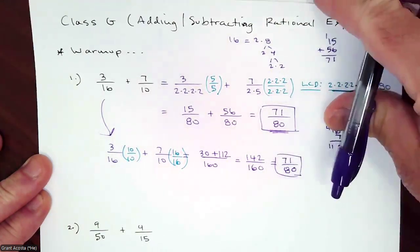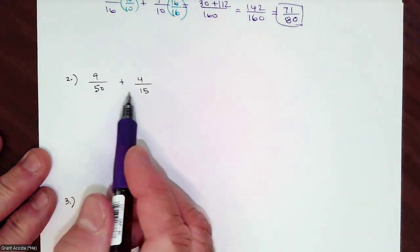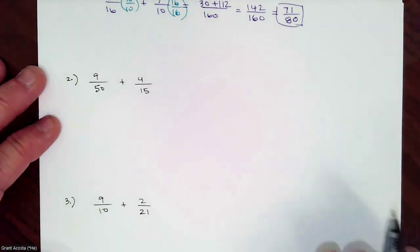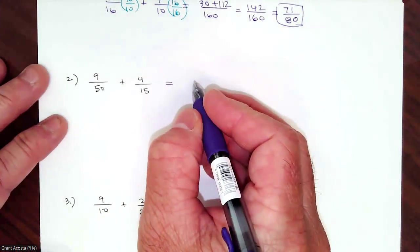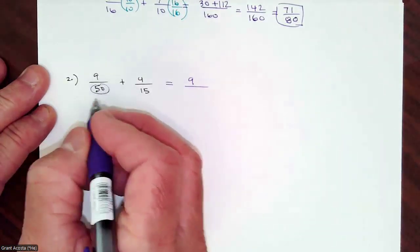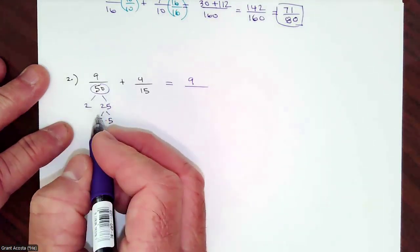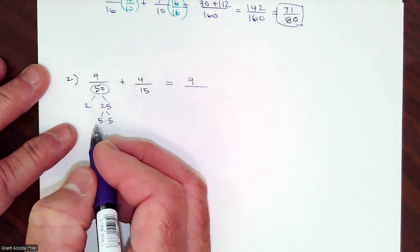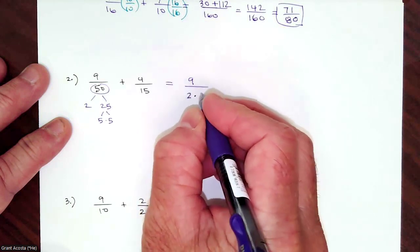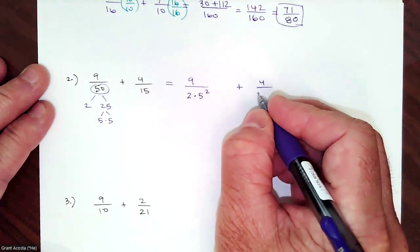On number 2, I have 9 over 50 plus 4 over 15. If I just multiply these together, 50 times 15 is a really large denominator, so it's convenient to find the lowest common denominator. For 50: 50 is 2 times 25, and 25 is 5 times 5, so 50 is 2 times 5 squared. For 15: that's just 3 times 5.